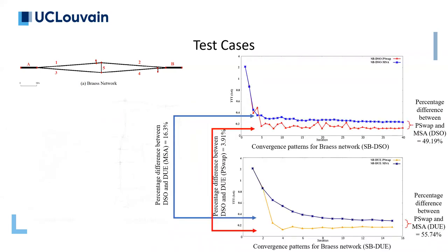Here are the results of the Braess-like network. There is about 50% difference between the total travel times in the system optimal scenarios between P-swap and MSA. Also, there is about 16% improvement of system optimal over user equilibrium if we use MSA as the swapping algorithm. This amount is equal to about 4% if we use the P-swap swapping algorithm.